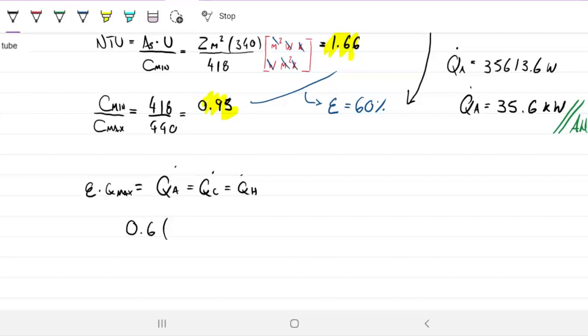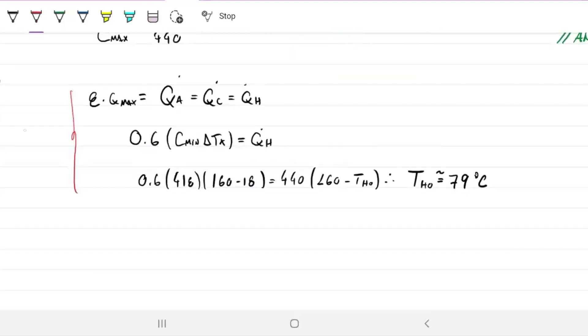Q actual equals C hot times delta T equals 35,600, so that means 440 times 160 minus T hot out equals 35,600, therefore T hot out is 79.06 degrees.